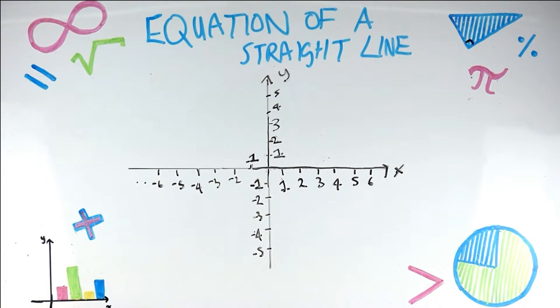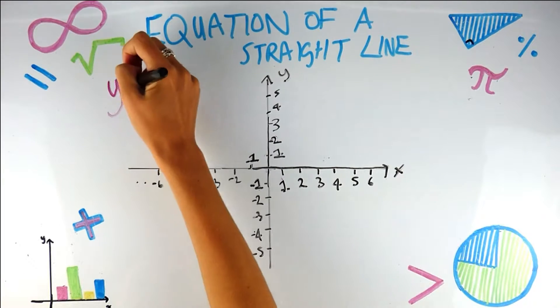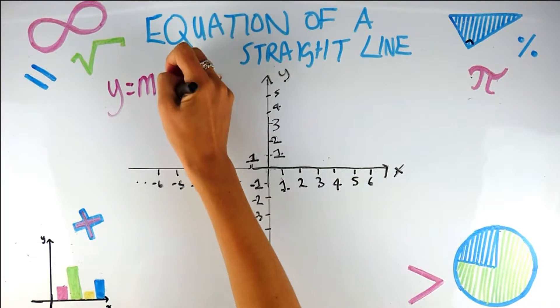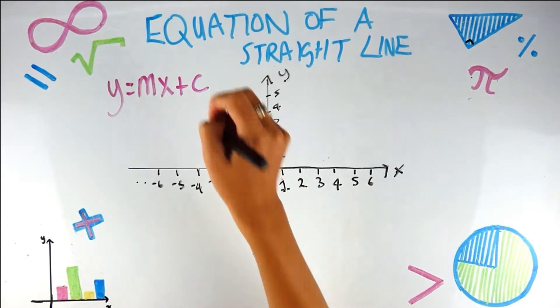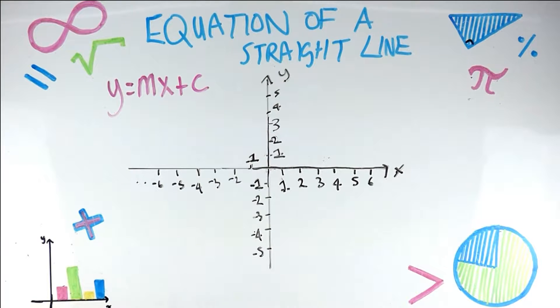Equation of a straight line. The equation of a straight line is one you're going to have to remember and it is this: y equals mx plus c.